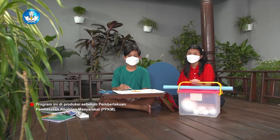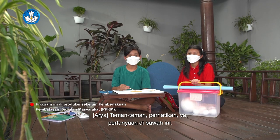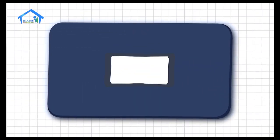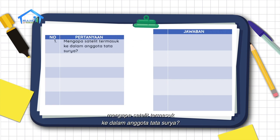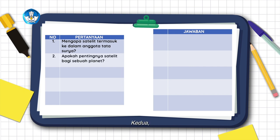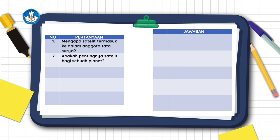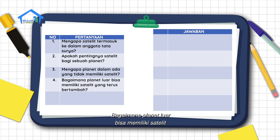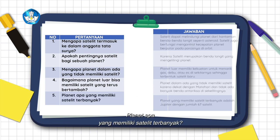Teman-teman, perhatikan pertanyaan di bawah ini, lalu pilih jawaban yang benar. Soal pertama: mengapa satelit termasuk ke dalam anggota tata surya? Kedua: apakah pentingnya satelit bagi sebuah planet? Ketiga: mengapa planet dalam ada yang tidak memiliki satelit? Keempat: bagaimana planet luar bisa memiliki satelit yang terus bertambah? Kelima: planet apa yang memiliki satelit terbanyak?